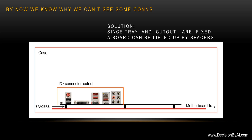So what is the solution? Since the tray and cutout are fixed, the board can be lifted up by spacers. You can see the spacer here. We put spacers below the board and lift it up so that the IO connectors align to the cutout.